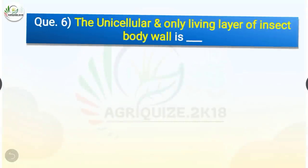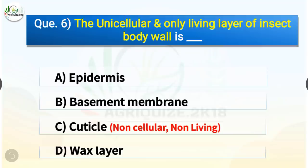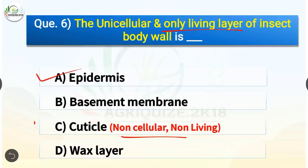Question number 6. The unicellular and only living layer of insect body wall is which? The options are epidermis, basement membrane, cuticle, or wax layer. The correct answer is option A, epidermis. The unicellular and only living layer of insect body wall is epidermis, whereas the non-cellular and non-living layer is the cuticle.